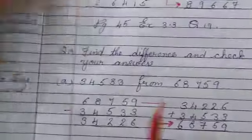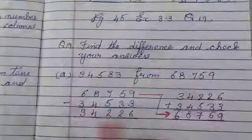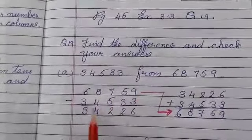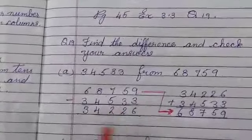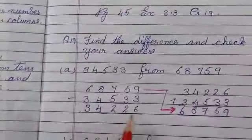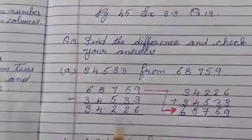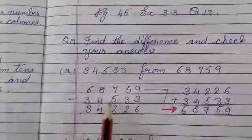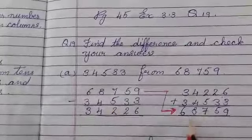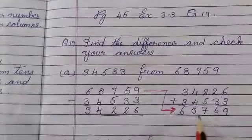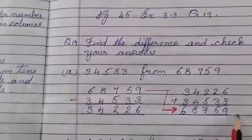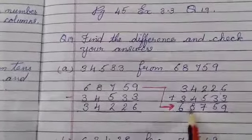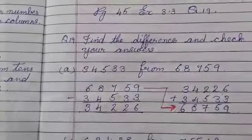Now I am sending you these sums. If you have done fine, otherwise you can check it. 68,759 minus 34,533. 34,226 is the answer. Now we add 34,226 and 34,533 and we get 68,759. This means the sum is correct. We got this number, it means our sum is correct.